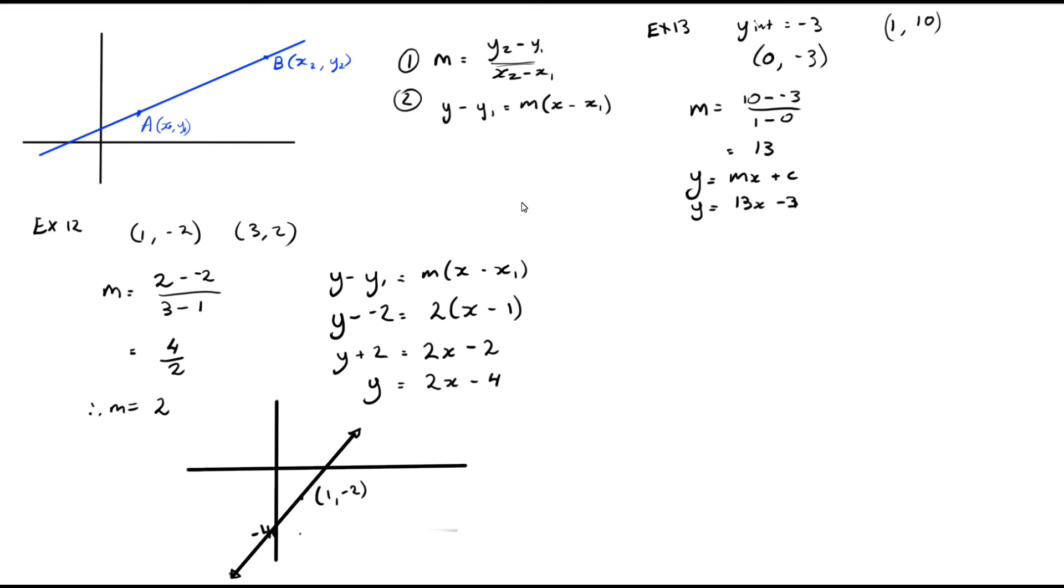So the next part is talking about two intercepts. Sometimes you're given two points on the graph and sometimes those points are a special case when they are the intercepts themselves. So this is example 14. We've got the straight line here. We've got point A at 4 and point B at 2.